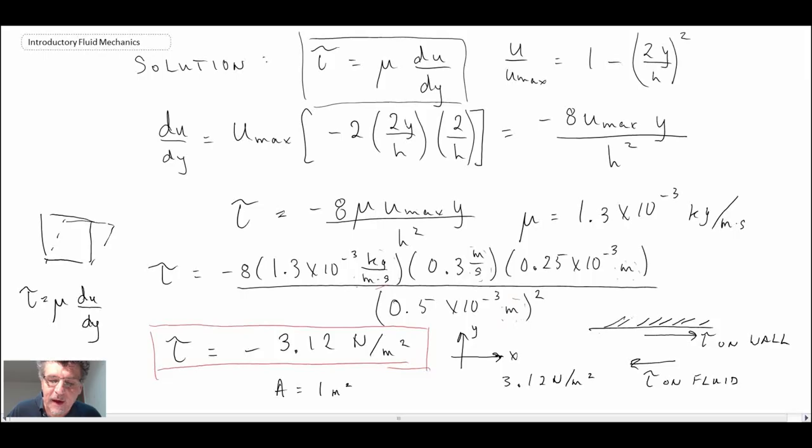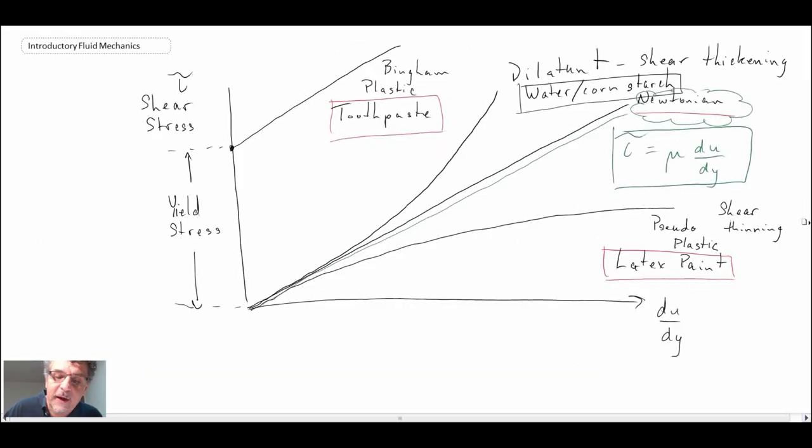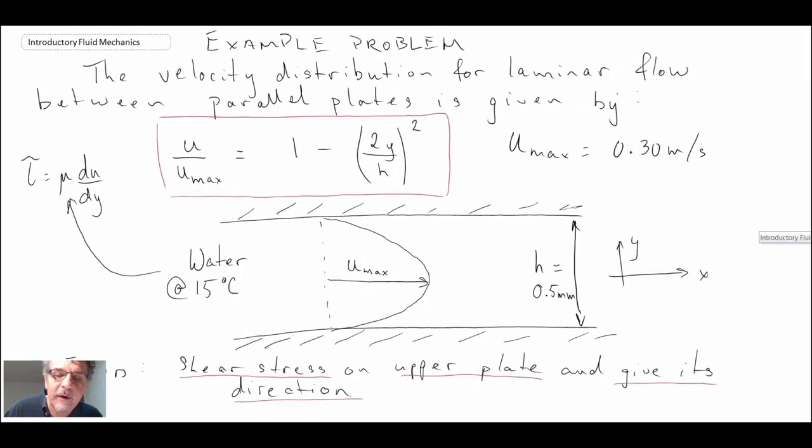That concludes the example of determining the shear stress on the upper wall. We find that it is in this direction, 3.12 newtons per meter squared, assuming area equals one meter squared.